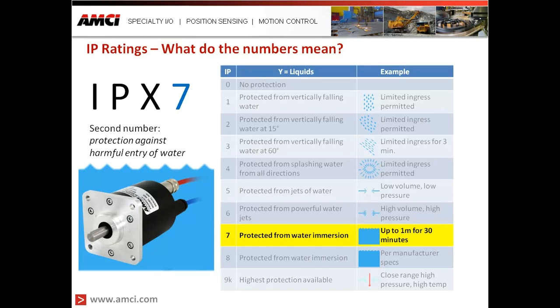There's a question here about 9K being caustic. Not necessarily, but it is often the case that 9K will give a caustic rating as well. However, IP ratings don't necessarily address caustic — that's more of a NEMA feature. IP ratings typically are just about liquid and solid penetration.